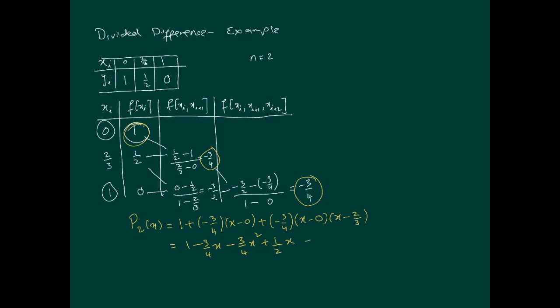And that in fact works out further, simplifies to 1 minus a quarter x and minus 3 over 4x squared, and that is our polynomial approximation to this data, the interpolation, the polynomial that interpolates this data.